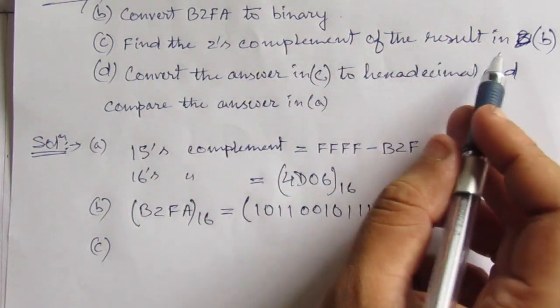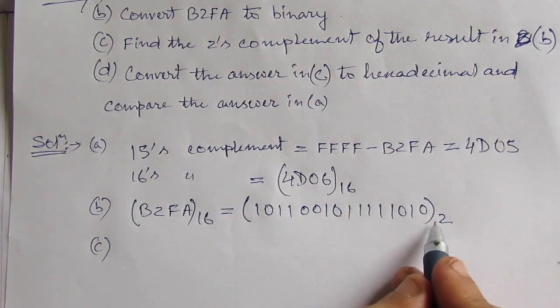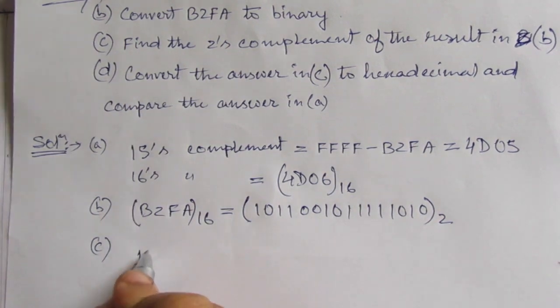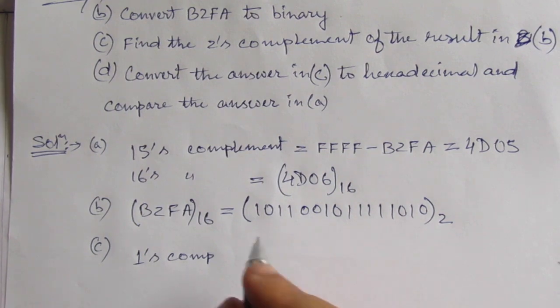Part C: find the 2's complement of the result in B. That means this is the result. We have to find out the 2's complement. Let us first find out the 1's complement. Then we will add 1 and we will find out the 2's complement.